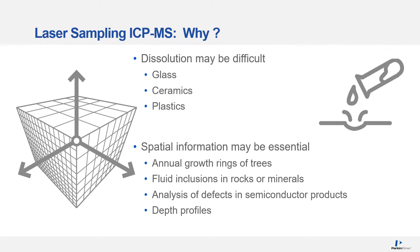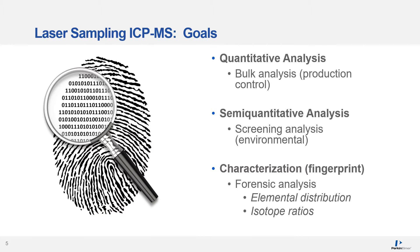Instead of looking at the bulk sample, laser sampling is a technique used to directly ablate small amounts of material for direct introduction into the ICP-MS. Some of the reasons to consider this type of sample introduction are dissolution concerns and perhaps spatial resolution information. With laser ablation ICP-MS, the sample can be used to gain qualitative, semi-quantitative, or even quantitative information about the sample.